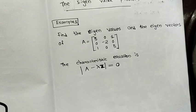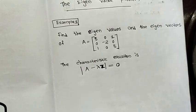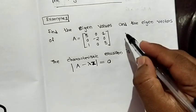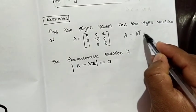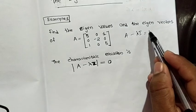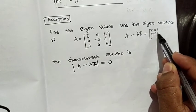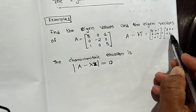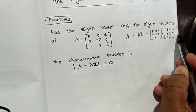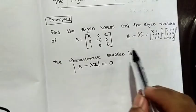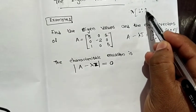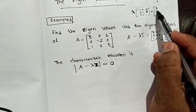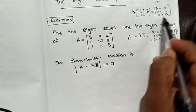Let's start with eigenvalues using A minus lambda I. This is all we have: A minus lambda I. The matrix A is: 5, 0, 1; 0, minus 2, 0; 0, 0, 5. We subtract lambda times the identity matrix, which has lambda on the diagonal entries.